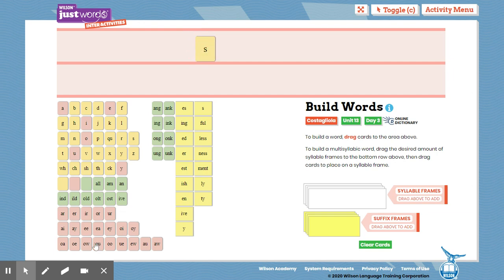S, OU, N, D. S, OU, N, D. Let's tap it out. S, OU, N, D. Sound. The word is sound. S, OU, N, D.